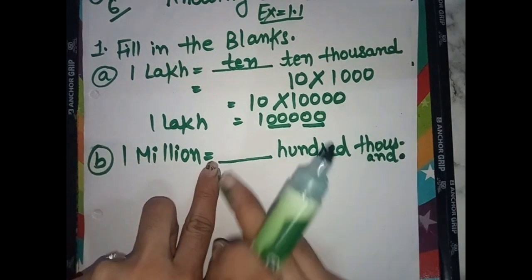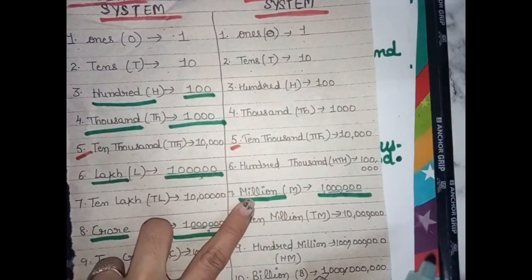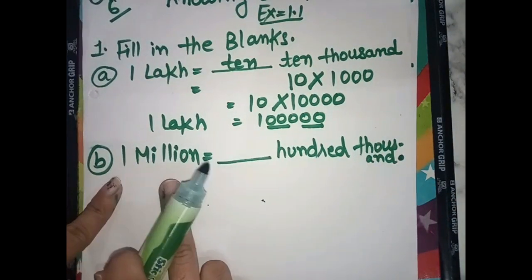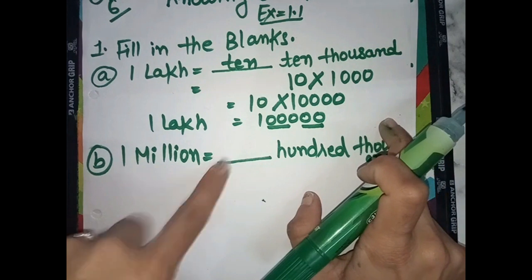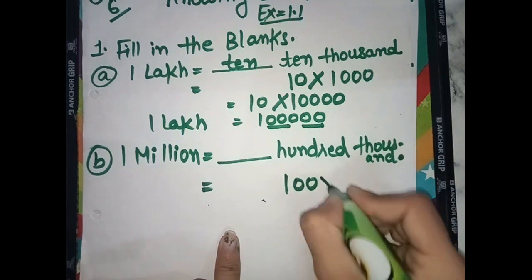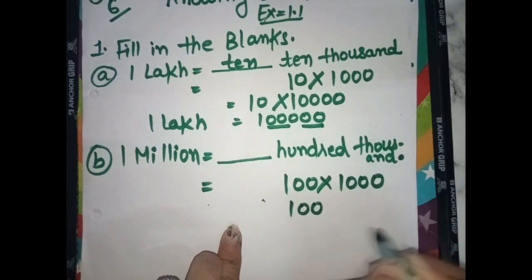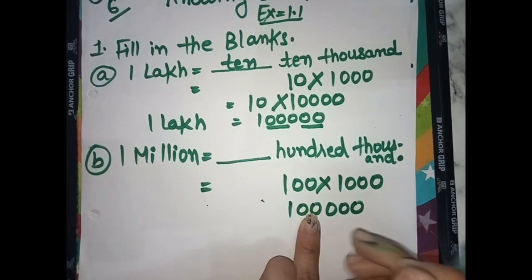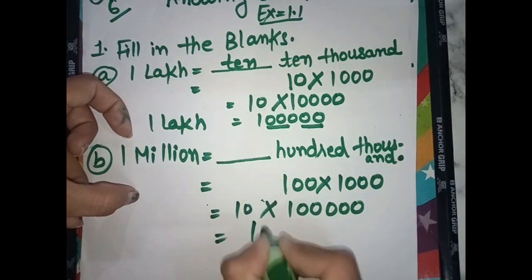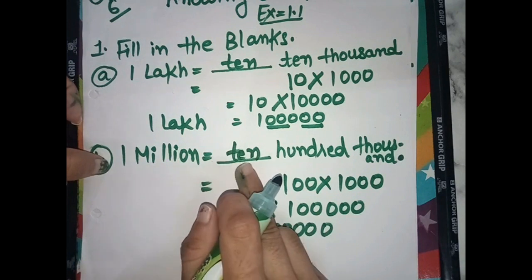1 million equals how many hundred thousands? In the International system, 1 million has six zeros. 100 is 1 with two zeros; 1,000 is 1 with three zeros; 1,00,000 is 1 with five zeros; 1 million is 1 with six zeros. So 1 million equals 10 hundred thousands.